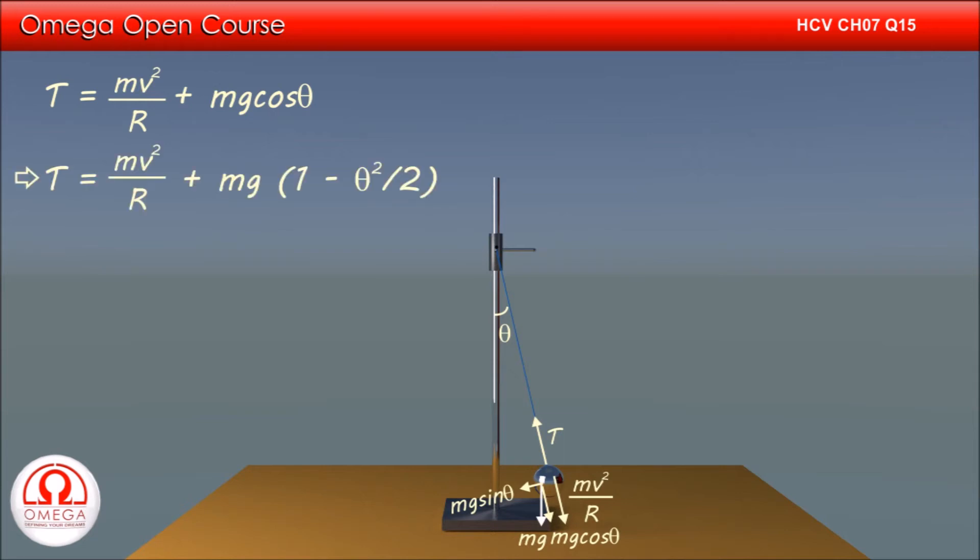Putting cos theta is equal to 1 minus theta square by 2, we get T is equal to mv square by r plus mg into 1 minus theta square by 2.